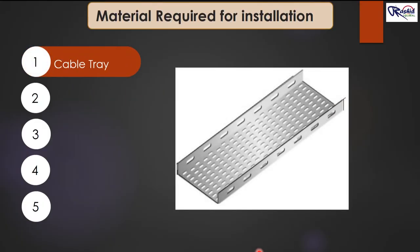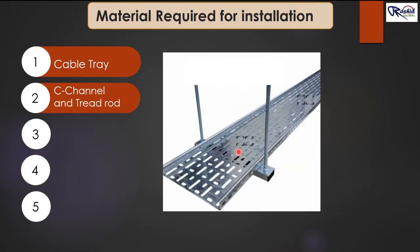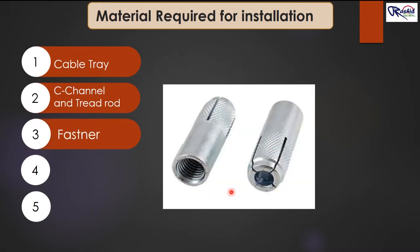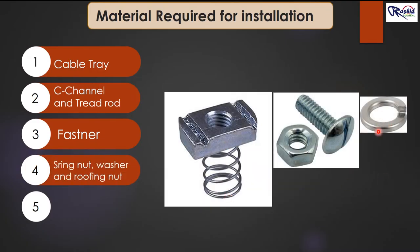Here we need: first, perforated cable tray; second, C-channel and thread rod, which is used to hang the cable tray; third, fasteners, which are used to fix the thread rod in the ceiling. There are different sizes of fasteners available in the market — we will choose the one compatible with the thread rod.